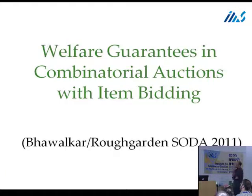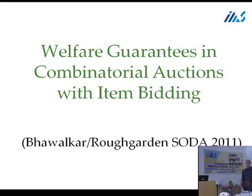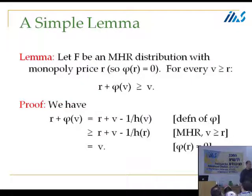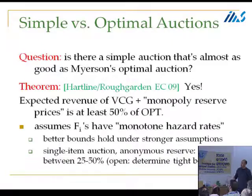Let me talk about the more recent work that studies approximate welfare maximization when you have very small message spaces — when you give bidders a very limited vocabulary for expressing their preferences. Kevin asked if the bound is tight, and the answer is: for arbitrary MHR distributions, it is tight. For exponential distributions you can lose as much as 50%. With more stringent restrictions on the tails you could derive bounds better than 50%.